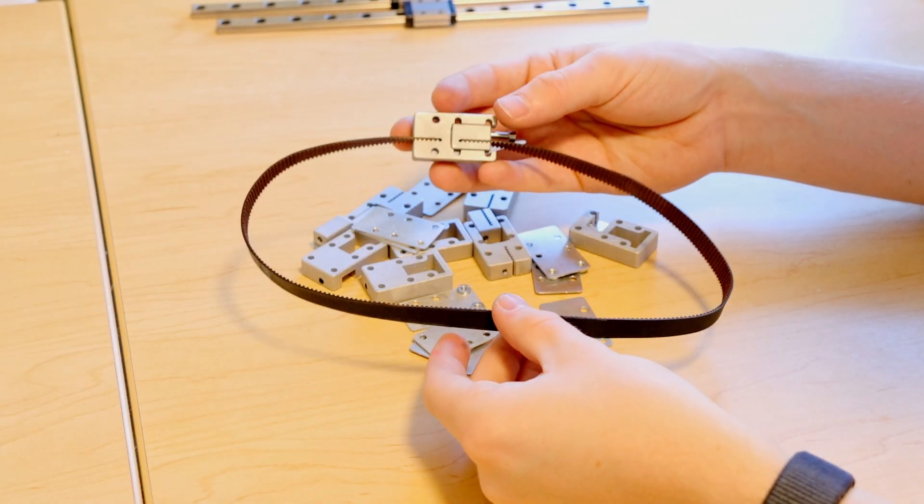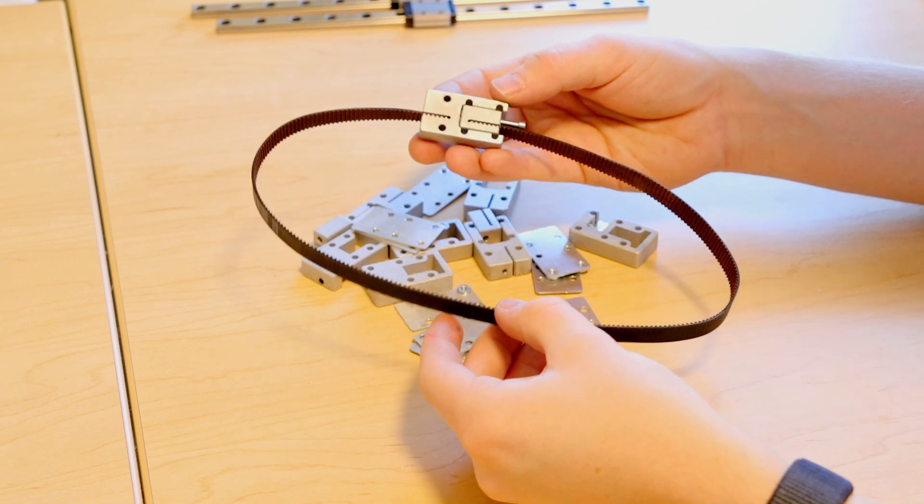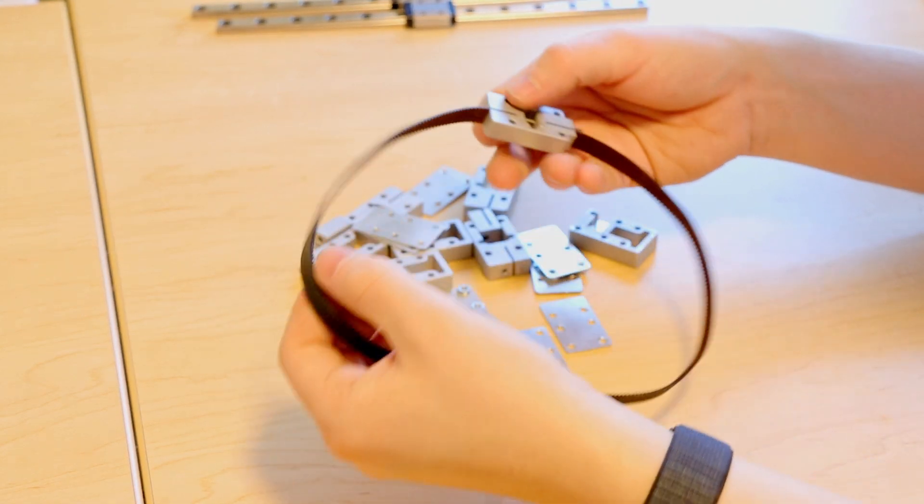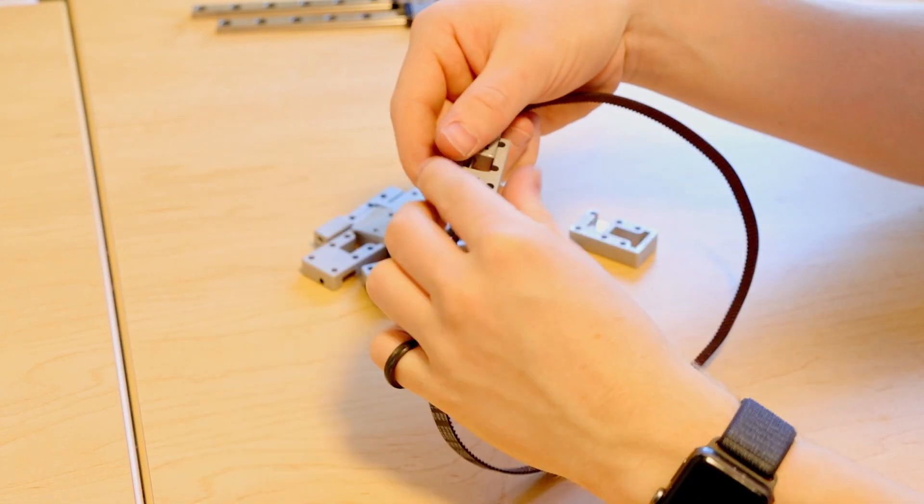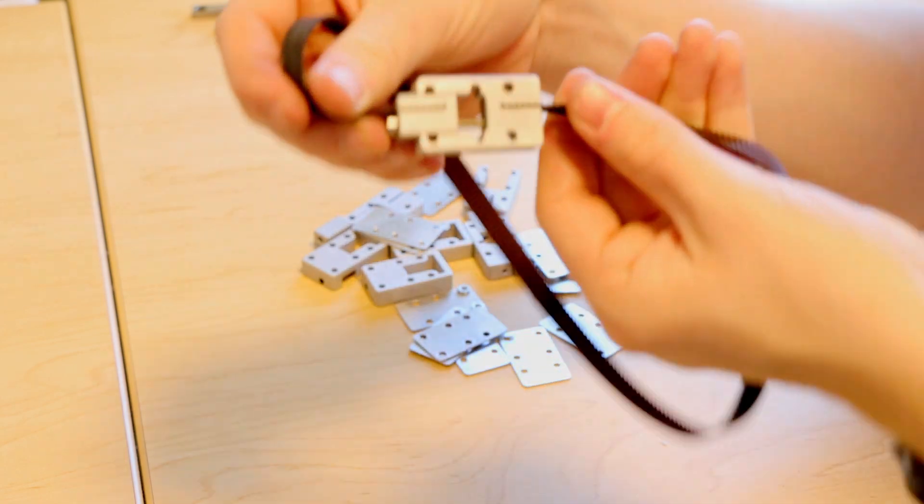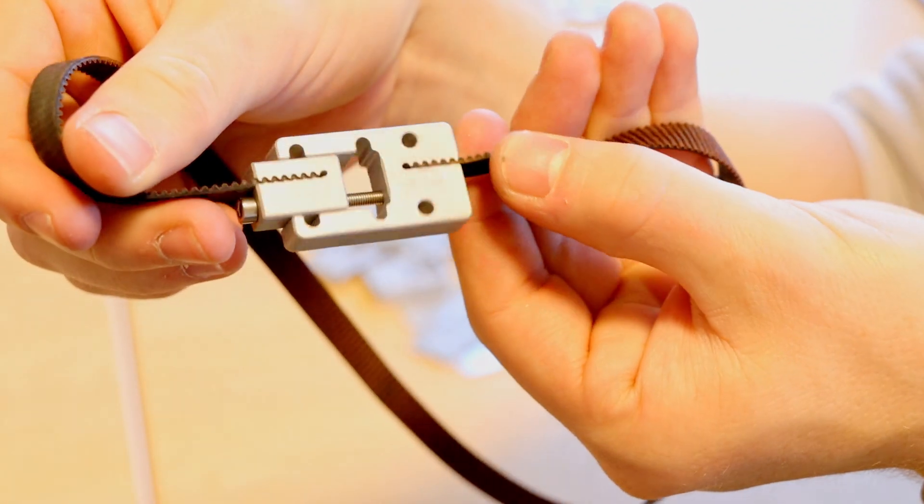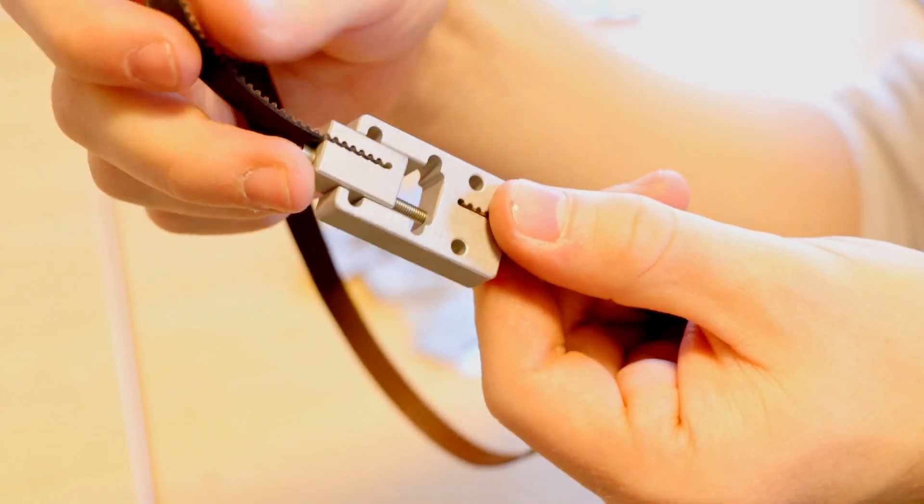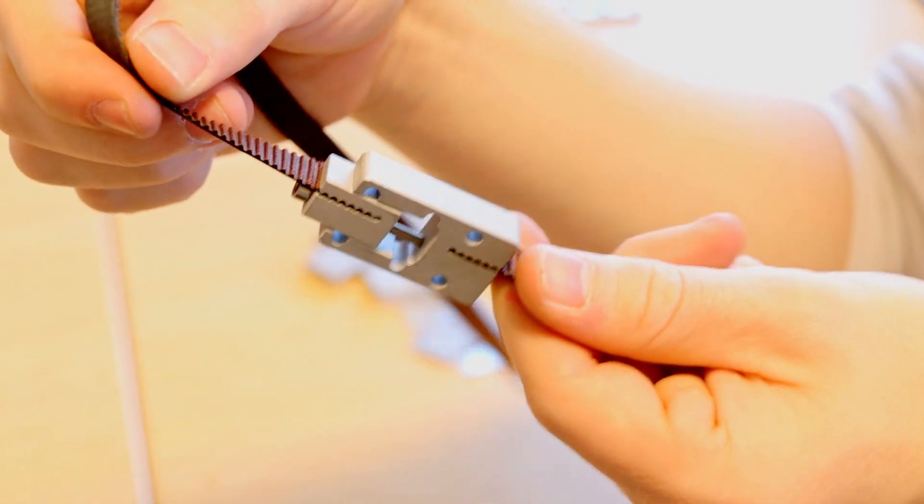So I'm going to take a little quick break to put together the belt tensioner assembly. So I basically created a loop of belt and then installed it in the actual belt tensioner which is this little block here and so by tightening the screw we can move the two ends of the belt closer together.